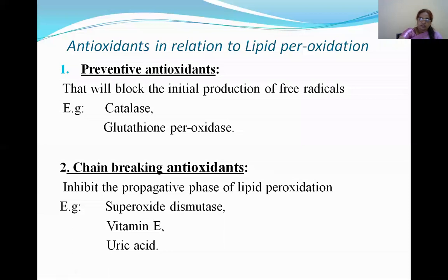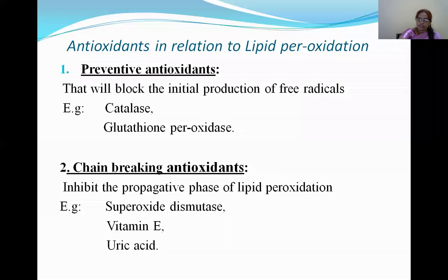Antioxidants in relation to lipid peroxidation are subdivided into preventive antioxidants and chain-breaking antioxidants. Preventive antioxidants block the initial production of free radicals. Examples are catalase and glutathione peroxidase.